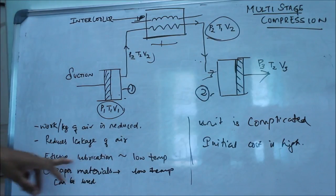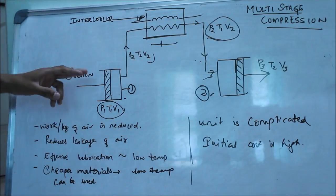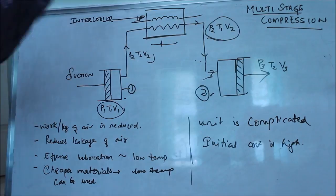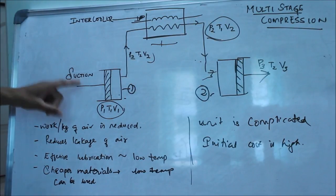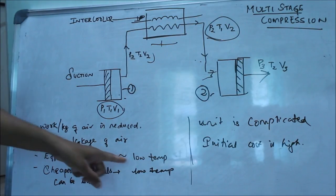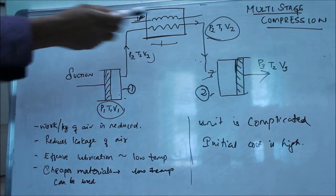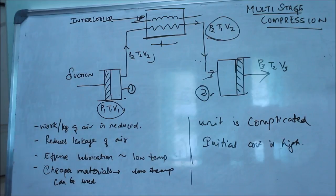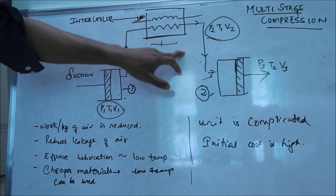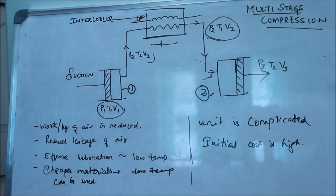Next, effective lubrication occurs inside. There is a crank and flywheel. Effective lubrication occurs because the operating temperatures are lower compared to a single stage compressor. Here we use an intercooler, so the temperature won't be as high as in a single stage compressor.